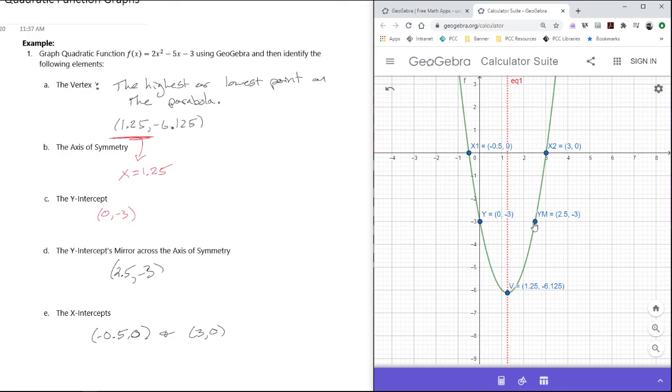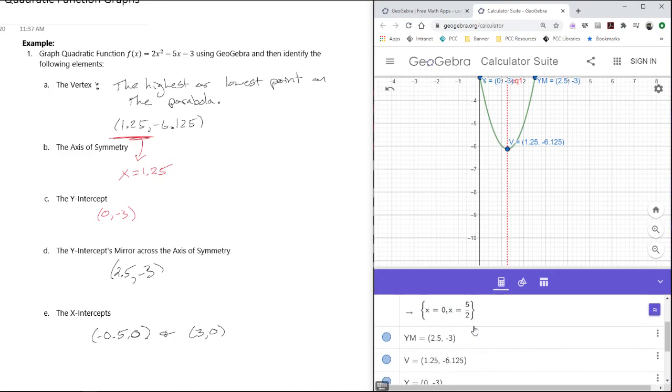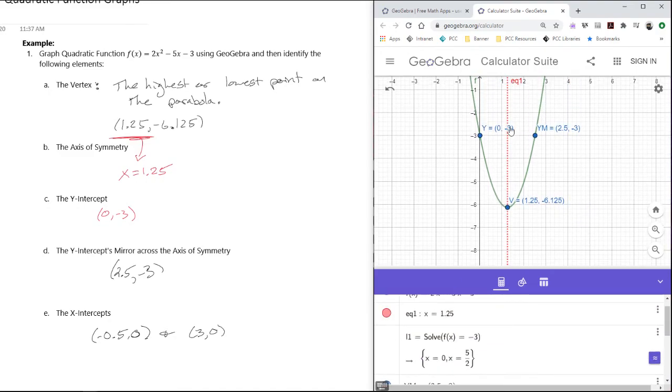Again, we used that solve operation by knowing that the y-intercept has a y-value of -3. I can say solve f(x) = -3 to find out what that x-value is for the mirror point.